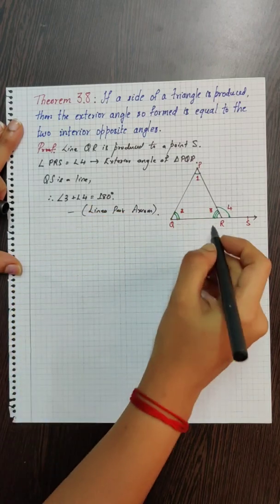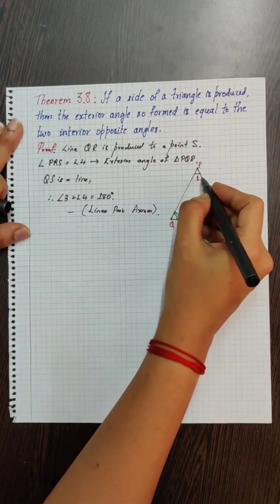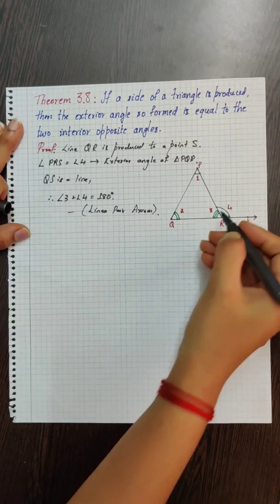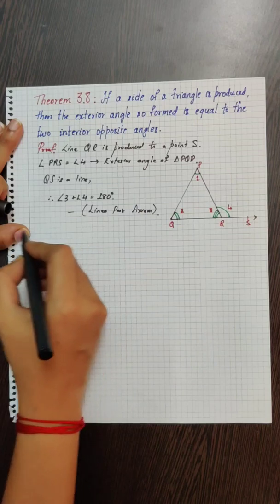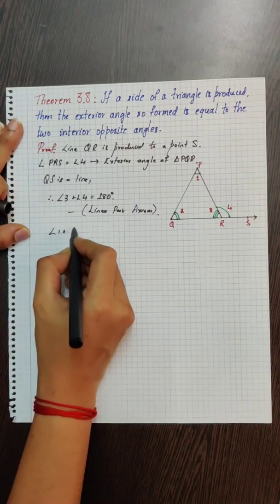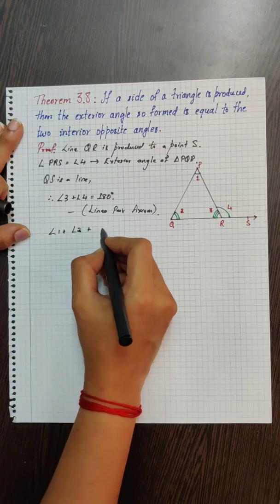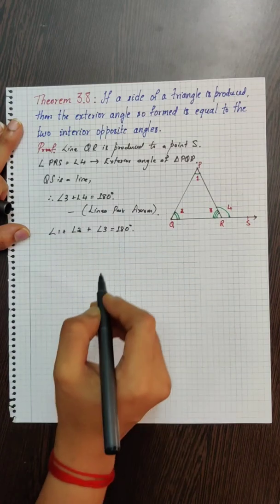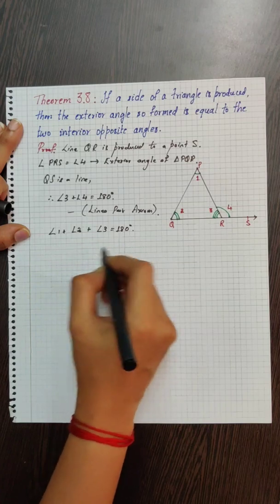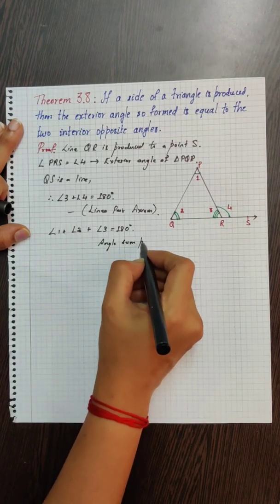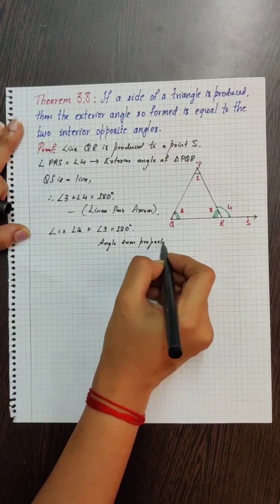We also know that angle 1 plus angle 2 plus angle 3 is equal to 180 degrees. This is from the angle sum property of the triangle.